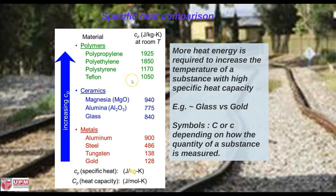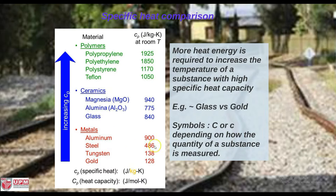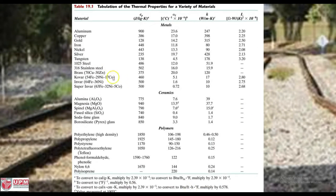This table shows some comparison of the specific heat of materials. We can see that polymers have a quite higher Cp at room temperature compared to metals, meaning more energy is required to increase the temperature of polymers compared to metals. Another table shows thermal properties of various materials, including Cp values and thermal conductivity of different materials.